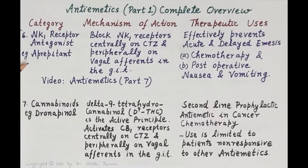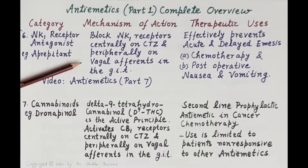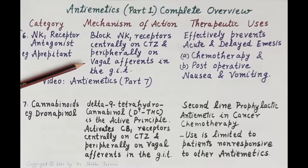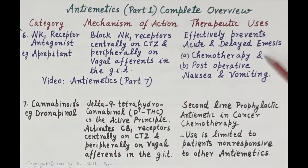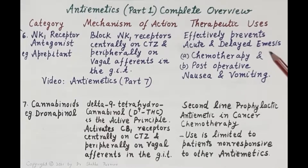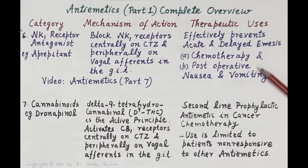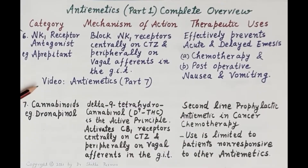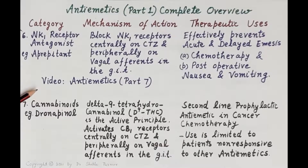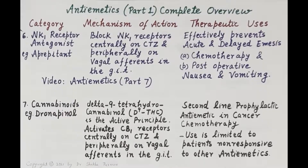The NK1 receptor antagonists — for example, aprepitant — block NK1 receptors centrally on the chemoreceptor trigger zone and peripherally on vagal afferents in the GIT. These drugs are effective in preventing both acute and delayed vomiting and are indicated in chemotherapy-induced nausea and vomiting and post-operative nausea and vomiting.